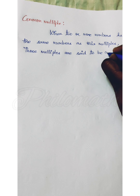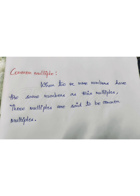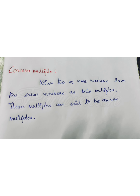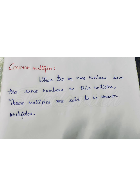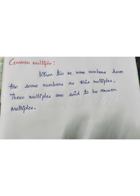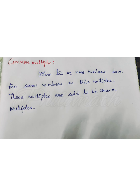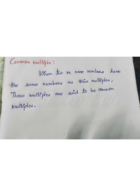Before that, we understand what a common multiple is. A common multiple is when two or more numbers have the same numbers as their multiples — those multiples are said to be common multiples. For example, if we take any two numbers, their multiples should be the same — that is called the common multiples. Now we'll see what a least common multiple is.